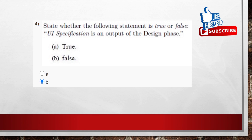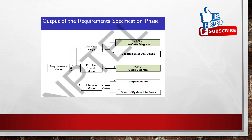The fourth question: state whether the following statement is true or false — UIS specification is an output of the design phase. The answer is false. According to the material, UIS specification is the output of the requirements specification phase, not the design phase. So the option is false.